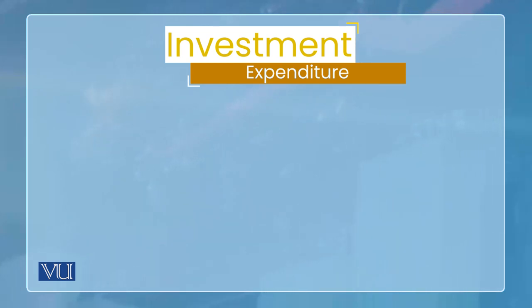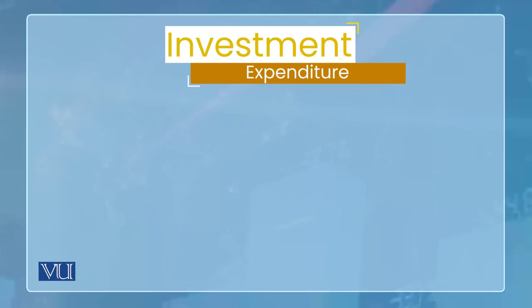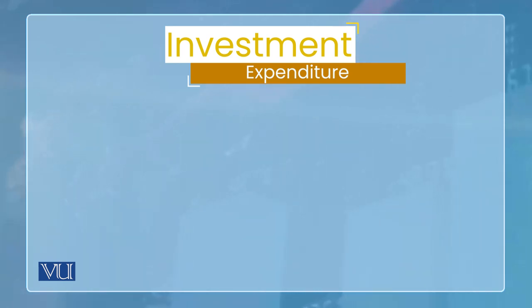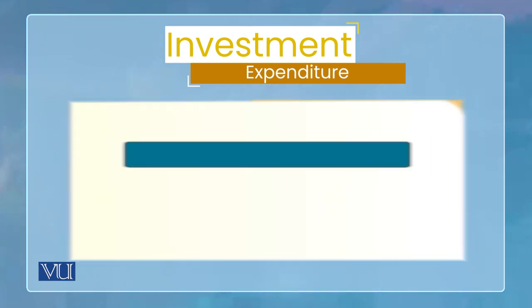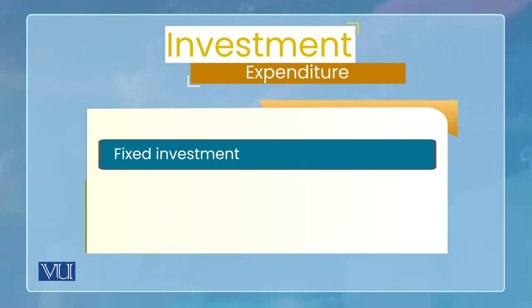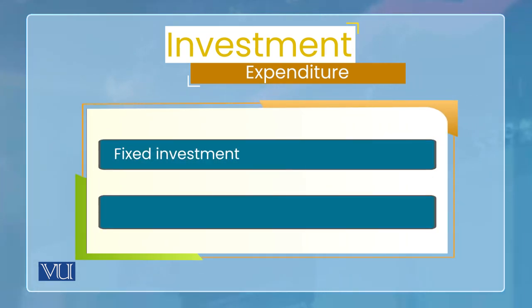Investment دو طرح کی ہوتی ہے۔ پہلے یہ clear کر لیں کہ investment سے مراد businesses کے expenditures ہیں، business sector کے expenditures ہیں، firms کے expenditures ہیں۔ اب یہ دو طرح کی ہو گئی: ایک fixed investment، ایک inventory investment۔